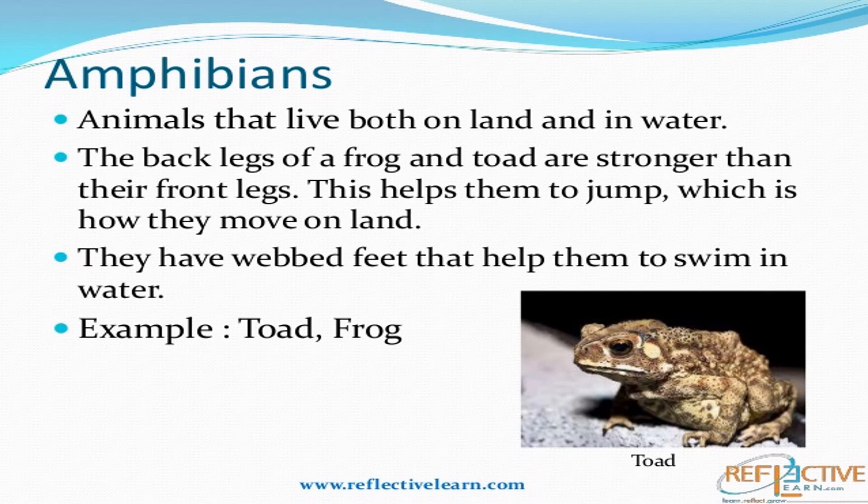Amphibians are animals that live both on land and in water. The back legs of a frog and toad are stronger than their front legs, which helps them to jump — that is how they move on land. They also have webbed feet that help them to swim in water. Examples are toad and frog.